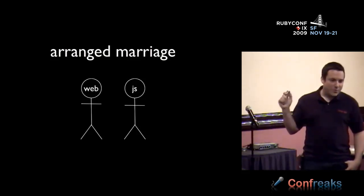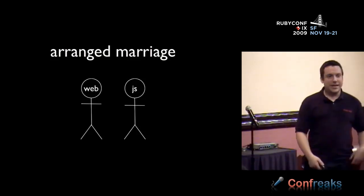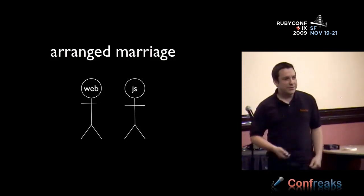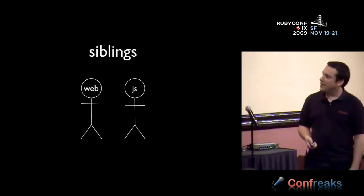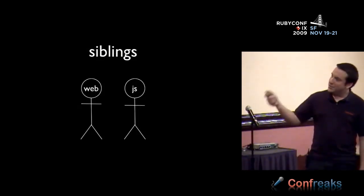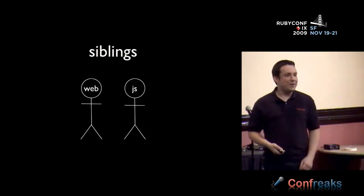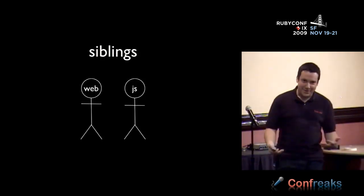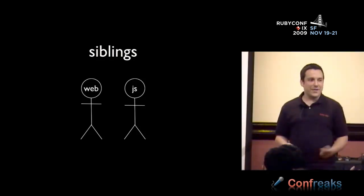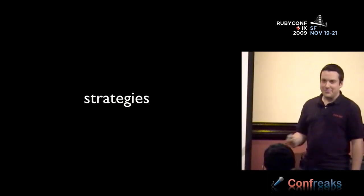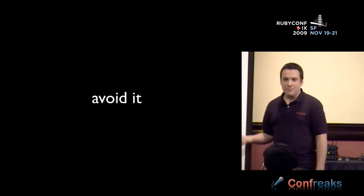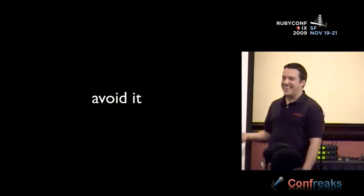My proposal for this talk jokingly started out saying: as web developers, we live in an arranged marriage with JavaScript. A better analogy is siblings — we don't choose our brothers or sisters, but we are living with them. That's the way it feels a lot of times as Rubyists when we have to interact with JavaScript. There are several strategies you can use when you're in this situation. The first one I've personally used for a very long time: avoid it. Try not to write JavaScript.